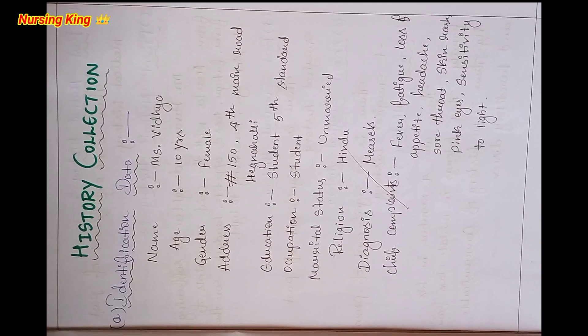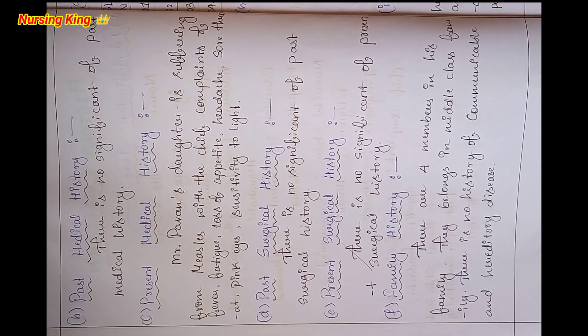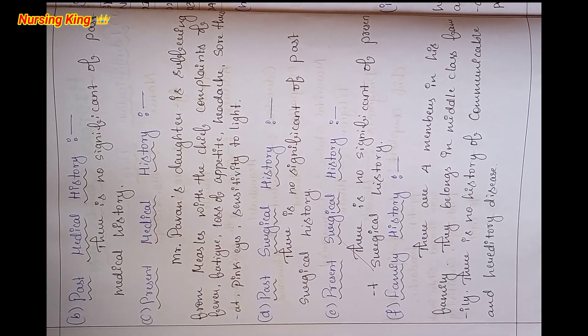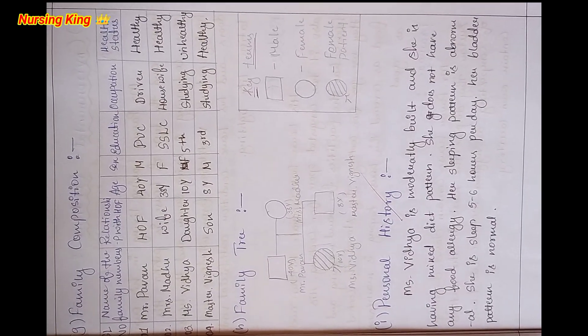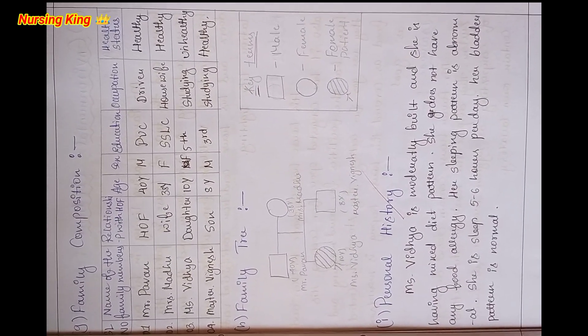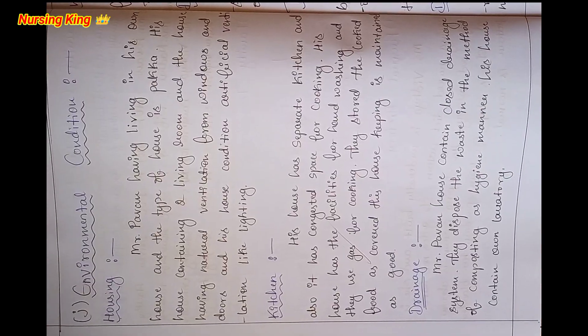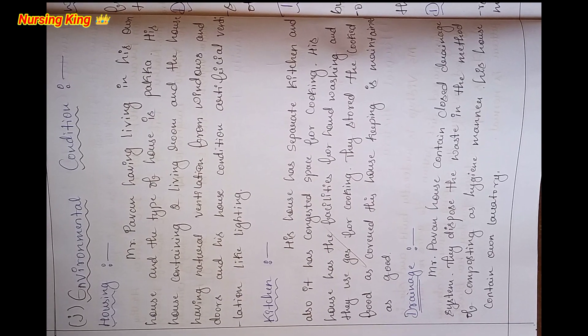After the introduction, you have to write the history collection. In that history collection, patient identification data you can mention. After that, the past patient medical and surgical history, then family history, family composition, and family tree.